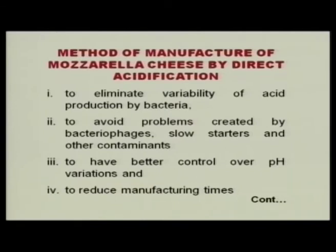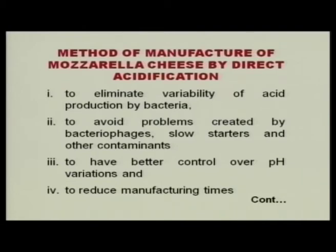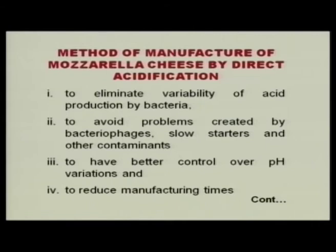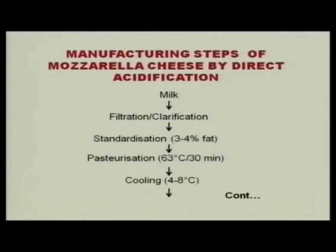We now come to the method of manufacture of Mozzarella cheese by direct acidification, because nowadays methods have been developed using direct acidification. The advantages are: microorganisms can lead to uncontrolled acid production, so to eliminate that variability this method is used; also to avoid problems created by bacteriophages, slow starters and other contaminants; to have better control over pH variations and to reduce manufacturing time. It has been reported that 2% milk acidified to pH 5.6 at 4 degrees centigrade with acetic, lactic, or hydrochloric acid results in a satisfactory product. Calcium level and recovery of solids were highest with phosphoric acid.